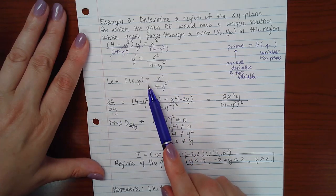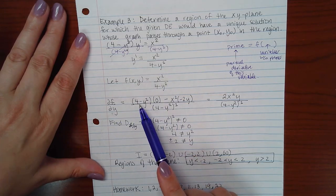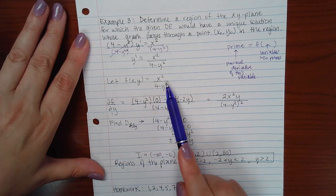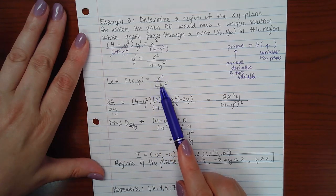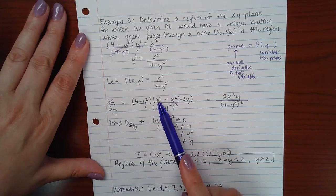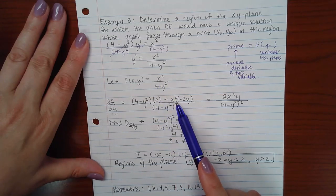So I did the quotient rule because this is a fraction. So I did low, D high, but remember, if I'm taking the derivative with respect to Y, this is acting like a constant and the derivative of a constant is 0. Minus high, D low.